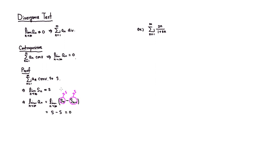The equivalent statement would be: if the limit of a_n is not equal to 0, then the series must be divergent. This is called the divergence test, and it catches some of the obvious divergent series, but not all divergent series.